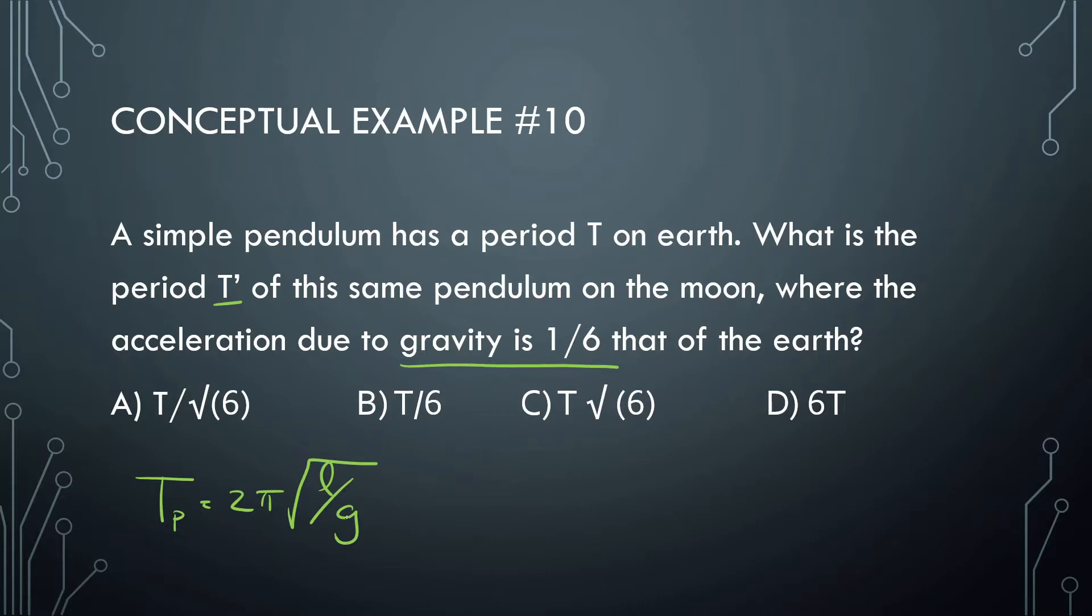So what we should know is if this gravity changes by a factor of 1 sixth, that means this side of the equation is going to change by a factor of square root of 6 over 1. Since 1 over 6 is in the denominator, that flips to 1 over 6. So that means this period here has to change to a factor of 6. So which one is that going to be? That's going to be C.